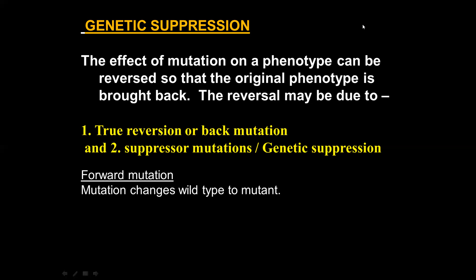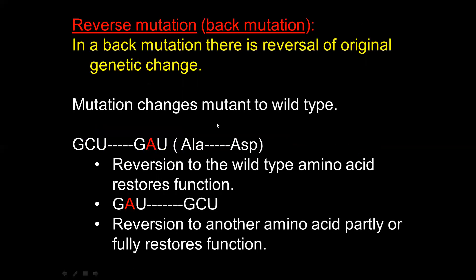What happens in a forward mutation? When the first mutation takes place, it changes the wild type phenotype into a mutated one. To get back the original phenotype, number one is back mutation, also called true reversion. In back mutation, there is reversal of the original genetic change.